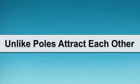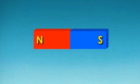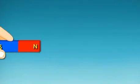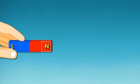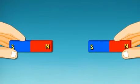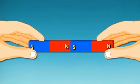Unlike poles attract each other. A magnet has two poles: north pole and south pole. If we bring the north pole of one magnet close to south pole of another magnet, then the two poles attract each other.